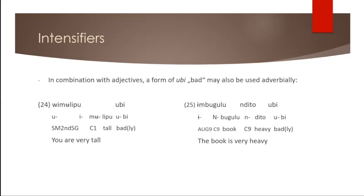And again, if we look at adjectives, the adverbial form of ubi, meaning bad, can be used. For example, in wimuli pu ubi, that would mean you are very tall, but literally you are badly tall, or the book is very heavy, the book is literally badly heavy.